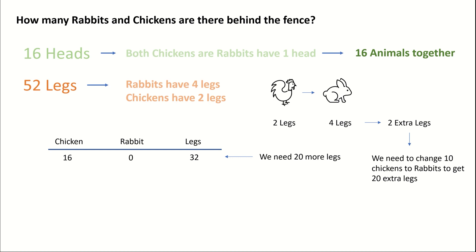So let's try that. We have 16 chickens, and we change 10 of those into rabbits. That means we have 6 chickens and we now have 10 rabbits. The number of legs is 6 times 2 equals 12 for the chickens, 10 times 4 equals 40 for the rabbits, and 40 plus 12 equals 52 legs altogether, which is exactly what we want.